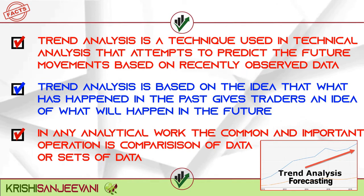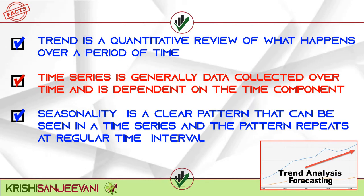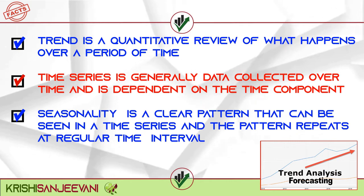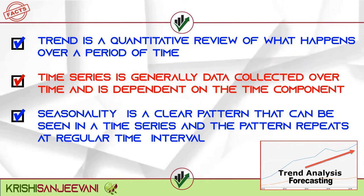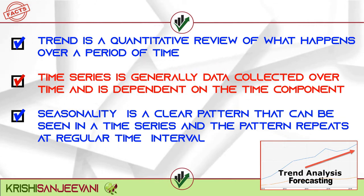In any analytical work, the common and important operation is comparison of data or sets of data. Trend is a quantitative review of what happens over a period of time. Time series is generally data collected over time and is dependent on the time component. Seasonality is a clear pattern that can be seen in a time series, and the pattern repeats at regular time intervals.